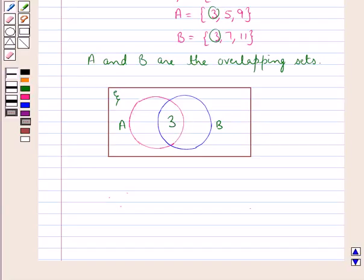Now the elements of the set A other than 3, that is 5 and 9, would be written in the left out portion of the set A which is not common to the set B.